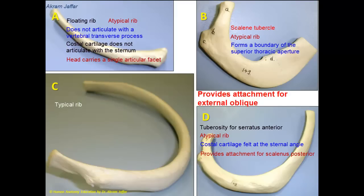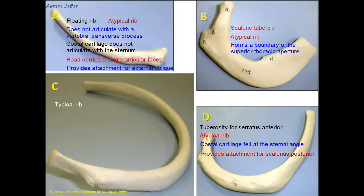Provides attachment for external oblique muscle: the external oblique muscle has eight digitations and they arise from the lower eight ribs. Serratus anterior is attached to the upper eight ribs, while external oblique muscle is attached to the lower eight ribs. So rib A, which could be the 11th or 12th rib, provides attachment for external oblique muscle. The 1st and 2nd ribs (B and D) do not provide attachment for external oblique muscle. Rib C could also provide attachment for external oblique muscle.